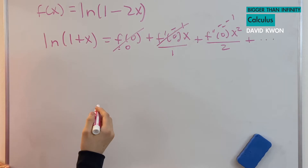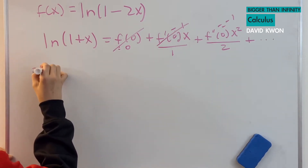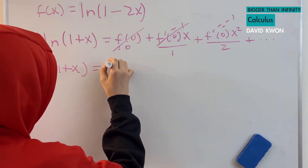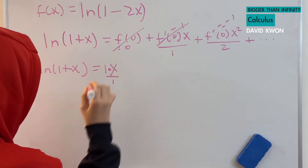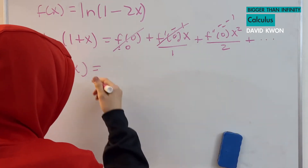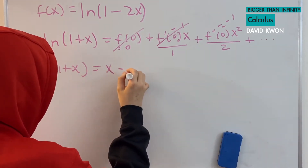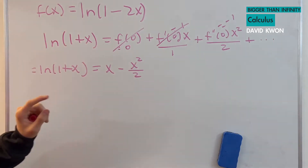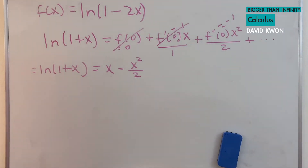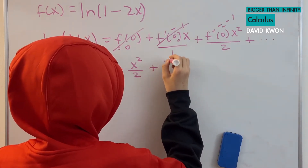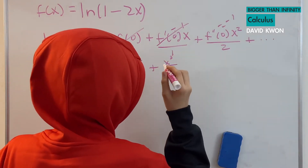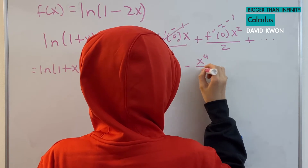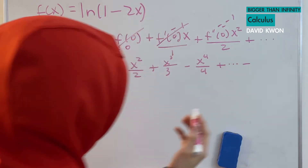Now let's rewrite our equation. So we have ln(1 + x) is equal to x minus x squared over 2, and then plus dot dot dot. Already we can see a pattern: the next term is x cubed over 3, and then the term after that is negative x to the power of 4 over 4, and so on — it goes on forever.